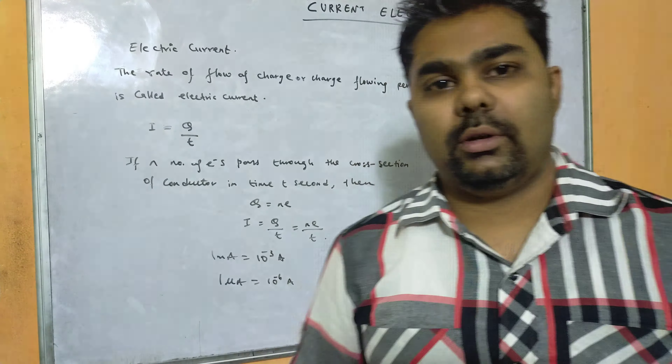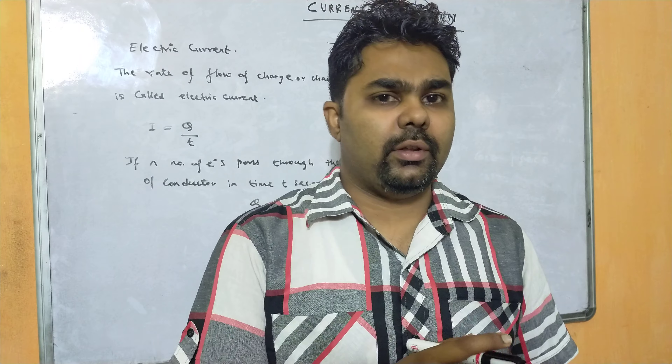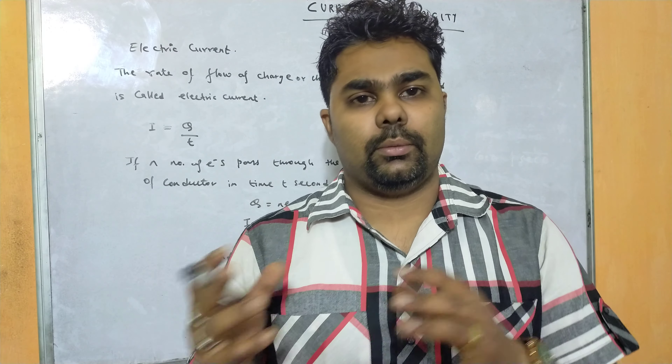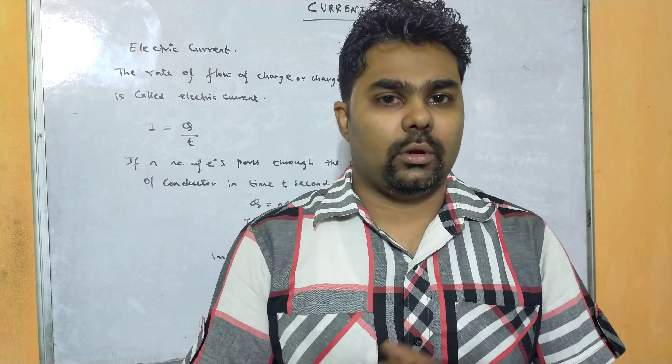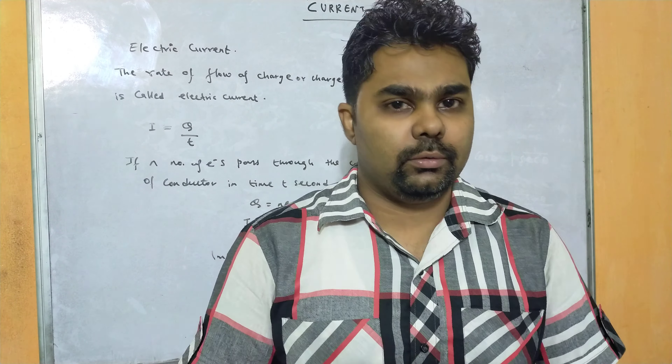What is electric current? In Class 9 we learned that the rate of flow of charge is called electric current. That means whenever there is a flow of charge, there is a production of current — just like wherever there is a vibration, there is a production of sound. Similarly, whenever there is a flow of charge, there is production of electric current.